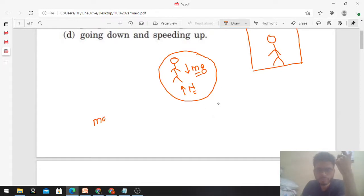So if Mg is greater than N, then acceleration of the person will be downward. This means acceleration is downward. And if normal is greater than Mg, you can see the difference.